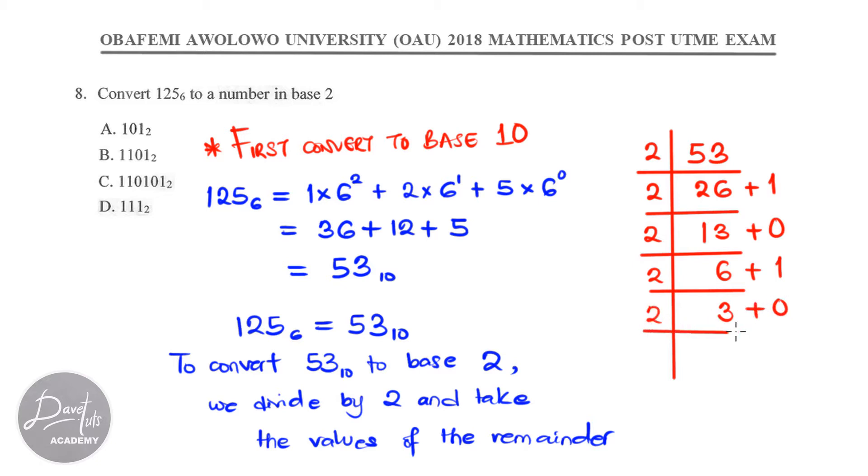So, we write plus 0. 2 in 3 is 1 and there is going to be a remainder 1 because 2 times 1 is 2 and 3 minus 2 is 1. 2 in 1 is 0 and we have 1 as our remainder.